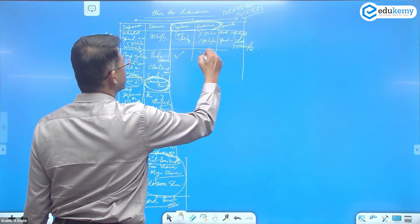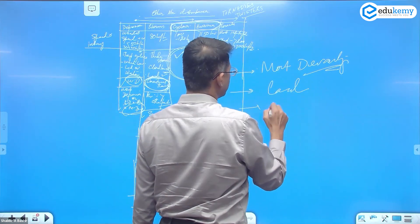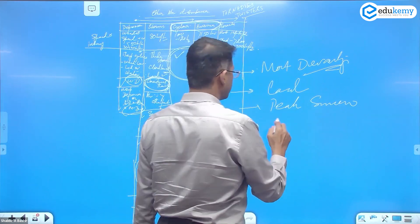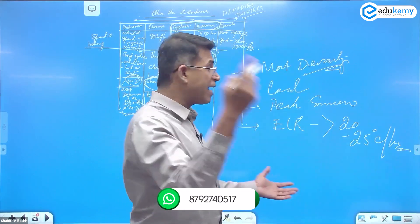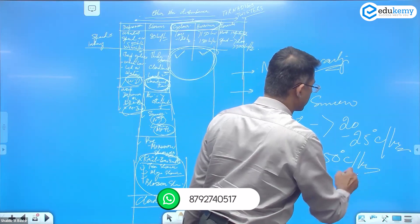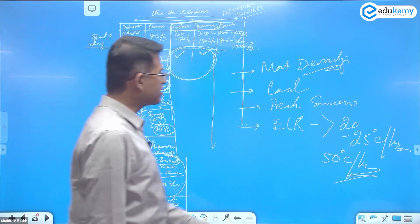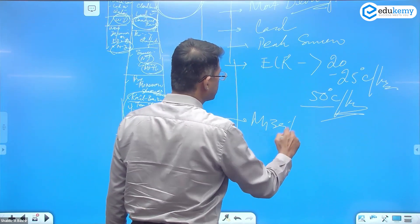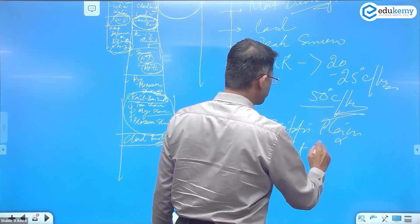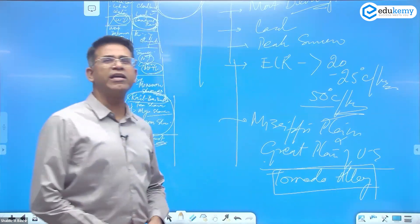Tornadoes are phenomena of the land and happen during peak summers when the Environmental Lapse Rate (ELR) is more than 20–25 degrees centigrade per kilometer, sometimes as much as 50 degrees centigrade per kilometer — unusually warm conditions with a very high ELR. Tornadoes are most common in the Mississippi Plains, also called the Great Plains of the US. There is a specific belt there called Tornado Alley where they are most frequent.